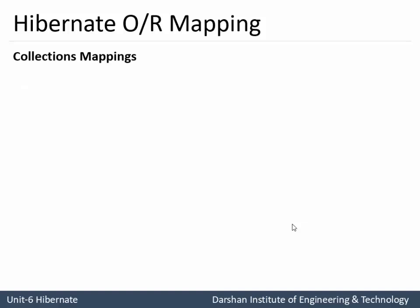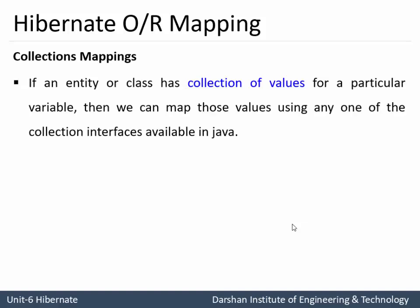Starting with Collection Mapping: if an entity or a class has a collection of values — for example, collection of values means Array, List, Map, Sorted Array, etc. — then we can map those values using any one of the collection interfaces available in Java.